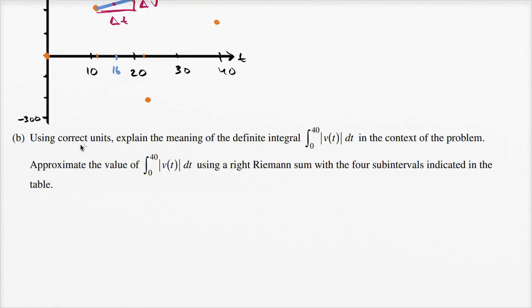Part B: Using correct units, explain the meaning of the definite integral from t equals zero to t equals 40 of the absolute value of v of t dt in the context of the problem. Approximate the value of that integral using a right Riemann sum with the four subintervals indicated in the table.